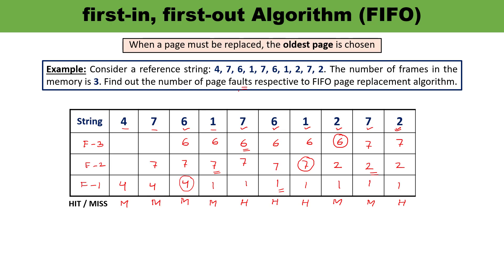Page faults means number of miss. Calculate how many misses are there: 1, 2, 3, 4, 5, and 6. Means total number of page faults when we are talking about FIFO algorithm, that is 6. I hope now this question is clear to you.